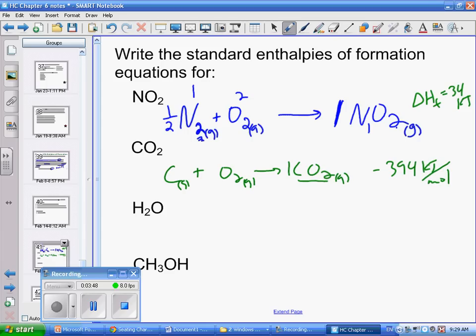Water, let's say it's liquid water. It could be H2 plus O2 yields H2O. I have two hydrogens, two hydrogens, so that matches. But here I have two oxygens, and I have one oxygen. I have to stay with one mole of a substance according to the definition, so I better multiply by a half in order to make that work. So that's writing standard enthalpies of formation equations.